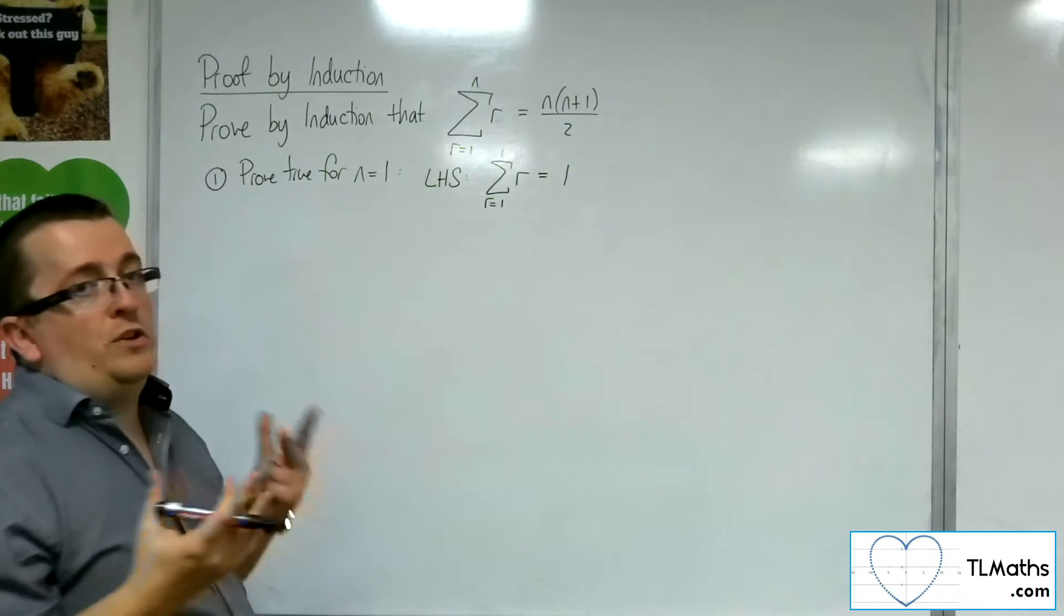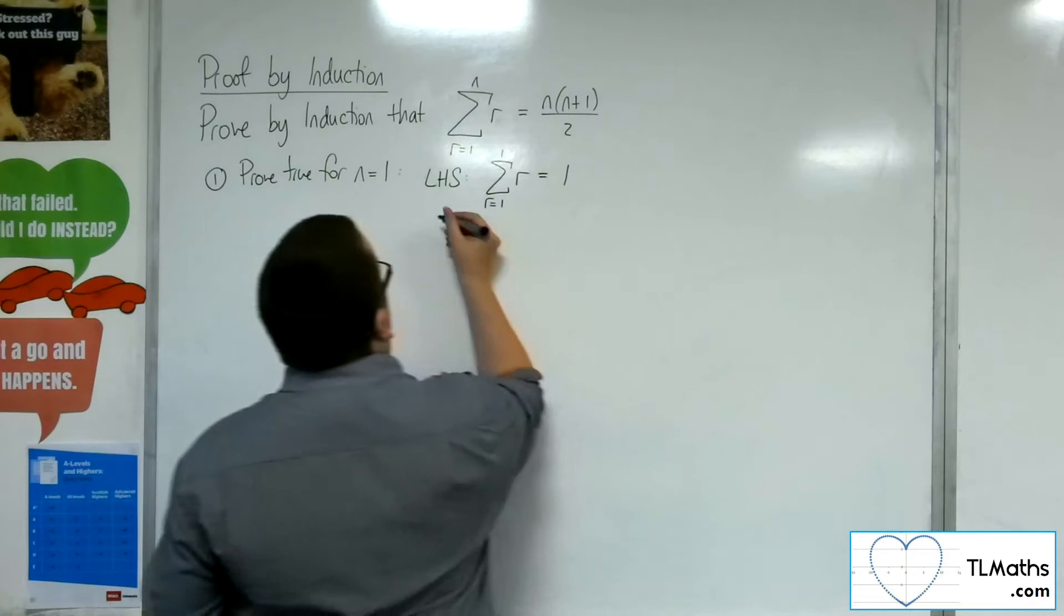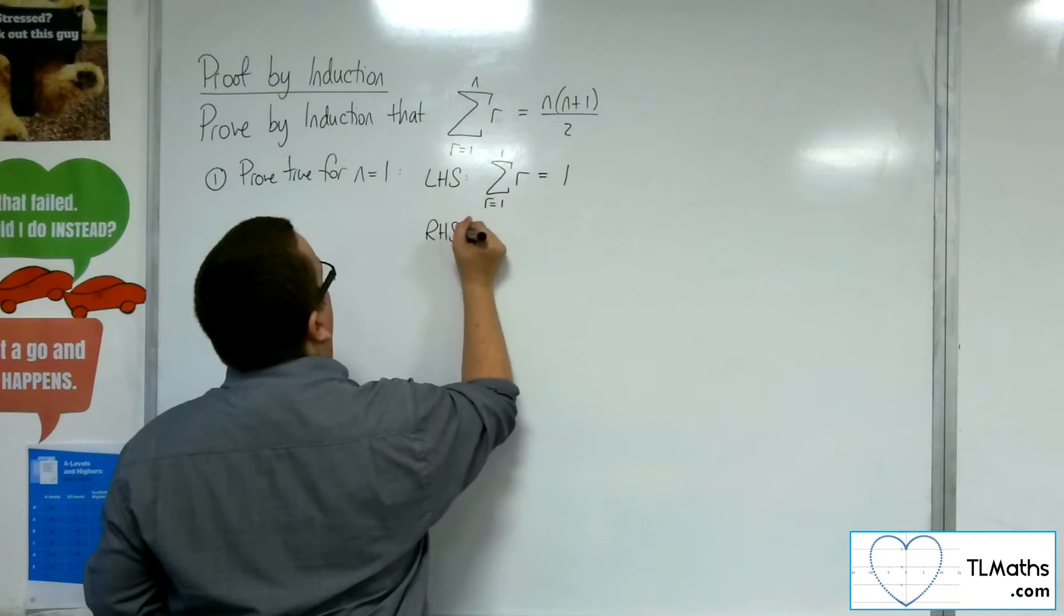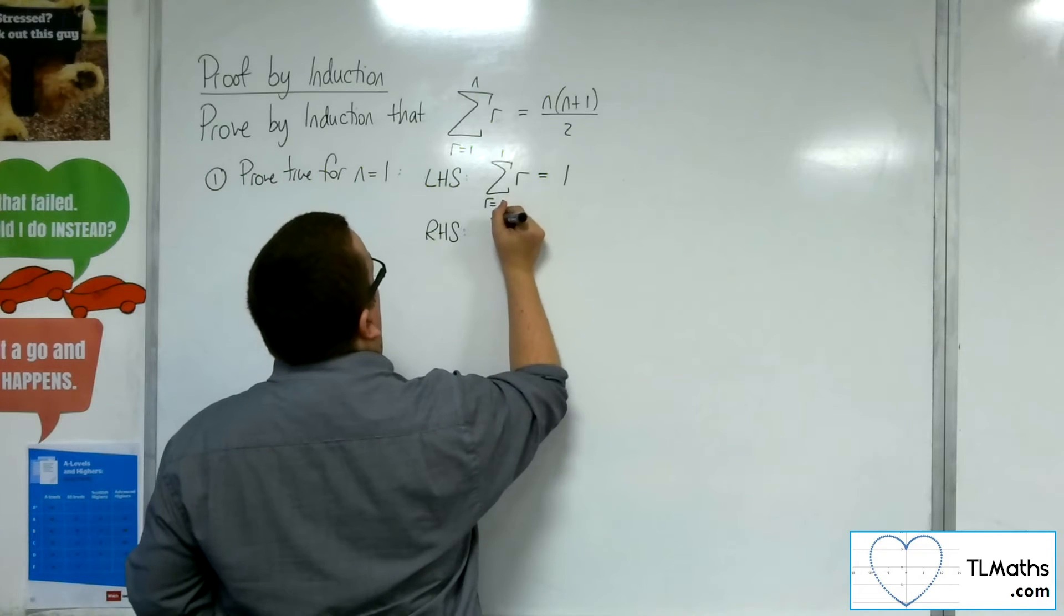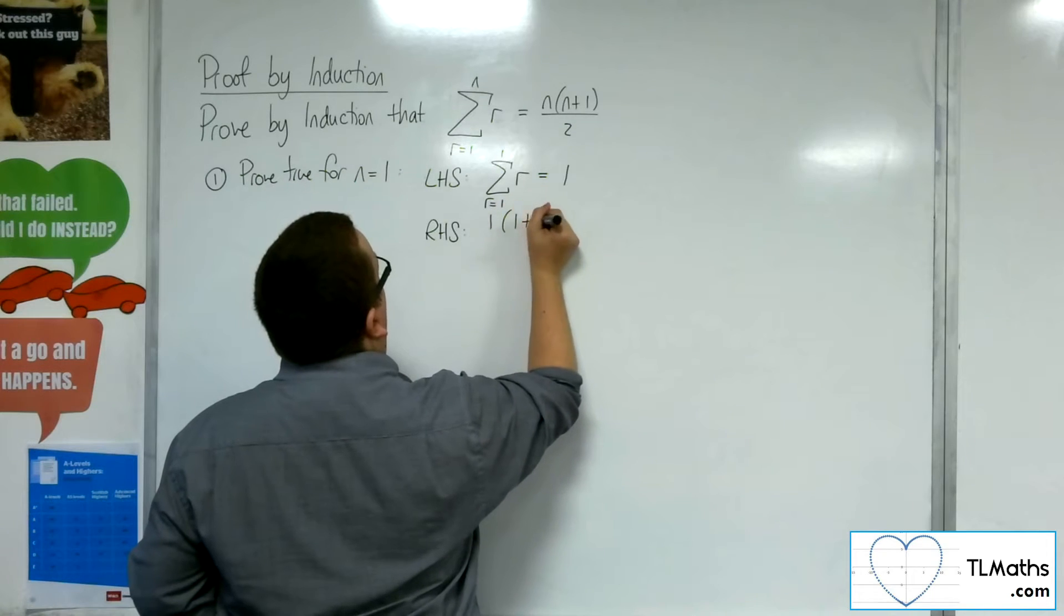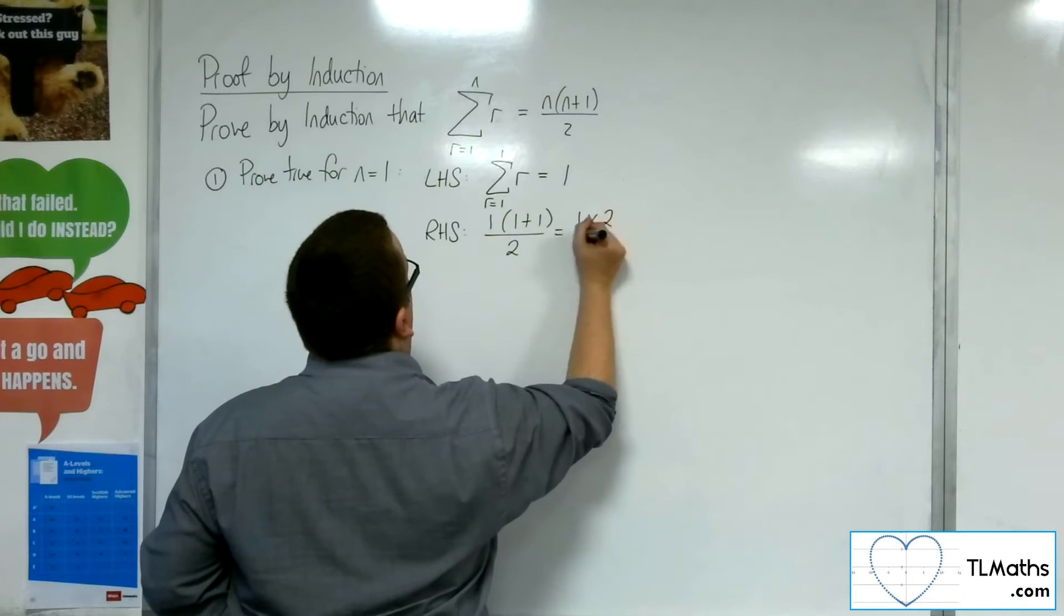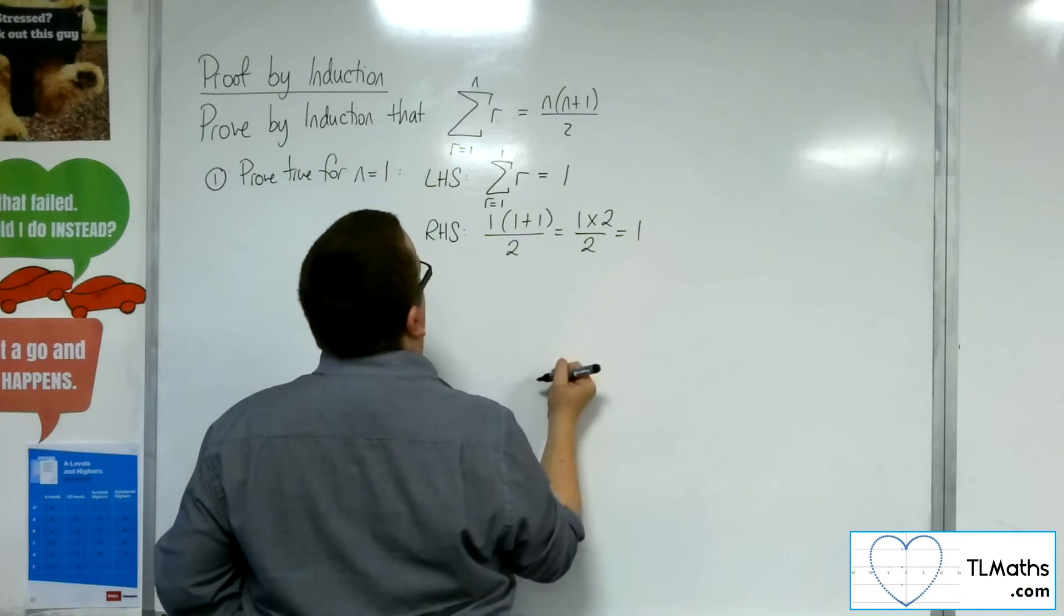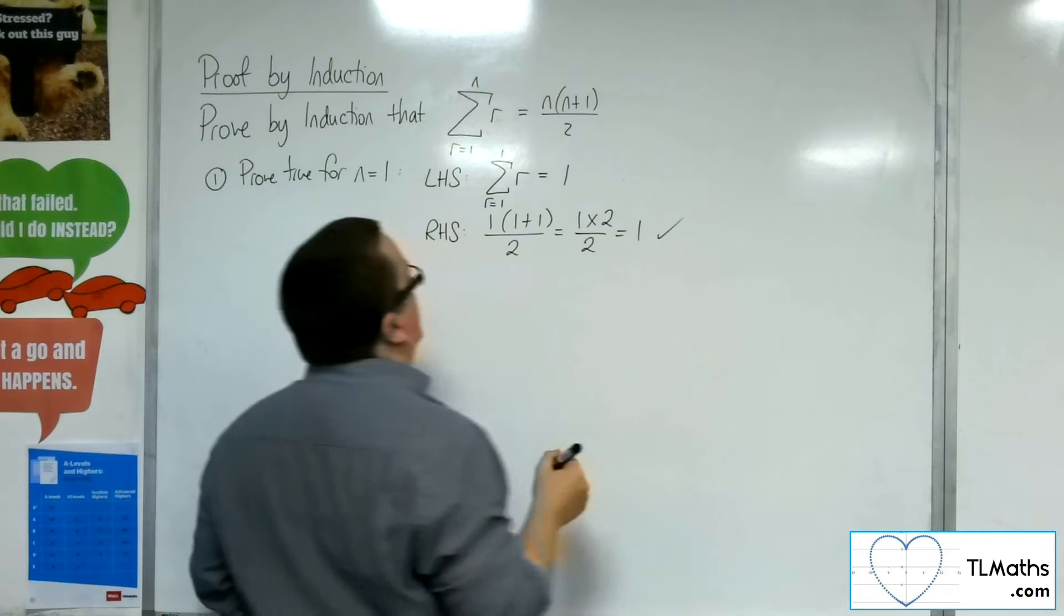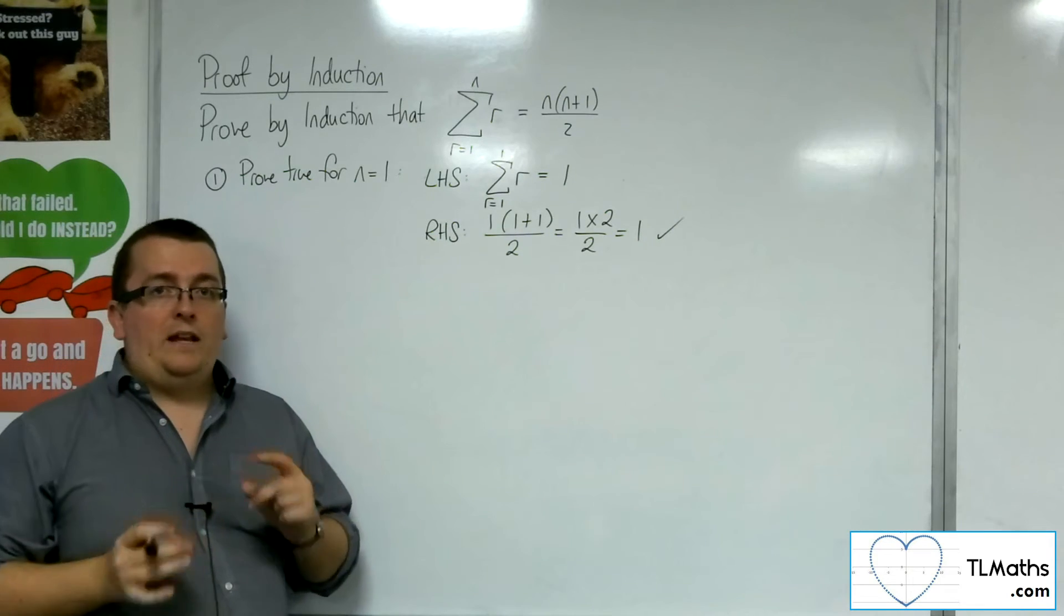Substituting r for 1. And the right hand side, we substitute in the 1, so we get 1 lot of 1 plus 1 over 2, which is 1 times 2 over 2, which is 1. So it is true for n equals 1.